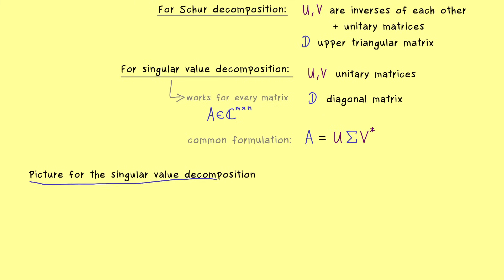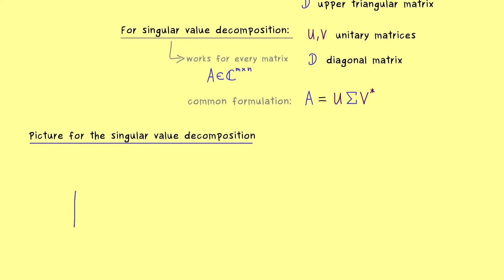maybe a short picture here is also helpful to remember the whole formula. So on the left hand side, you would find a rectangular matrix A. There we would find n columns and m rows. And now obviously on the right hand side, our sigma has exactly the same form as A.